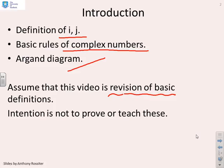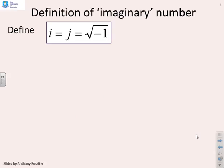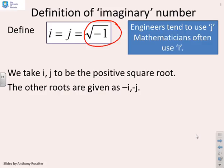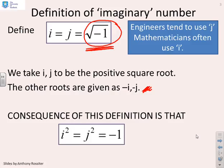The imaginary number i or j is defined as the square root of minus one. Engineers tend to use the symbol j whereas mathematicians often use i, so you need to be interchangeable depending on context. i and j are taken to be the positive square root of minus one; the other root is minus i or minus j. A key consequence: i squared or j squared equals minus one — don't forget that, as it's useful in many scenarios.